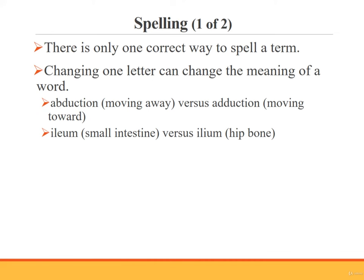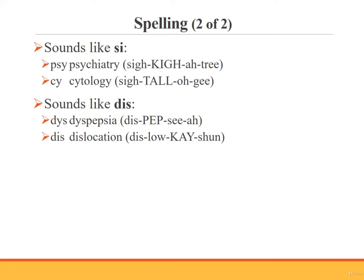Remember, there is only one correct way to spell a medical term. Changing even one letter can change the meaning of the entire term. For example, the word abduction means moving away. If you change that B to a D, you get adduction, which means moving toward. In another example, the word ileum with an E means small intestine. If you change the E to an I, you get the term for the hip bone. The spelling process is complicated by several series of letters that sound the same but are spelled differently. For example, two series of letters sound like 'si': P-S-Y as in psychiatry, and C-Y as in cytology. Similarly, two series of letters sound like 'dis': D-Y-S as in dyspepsia, and D-I-S as in dislocation.